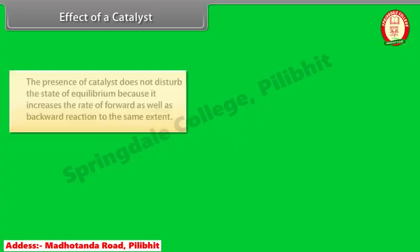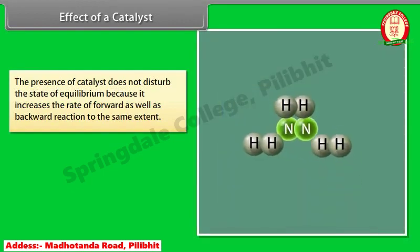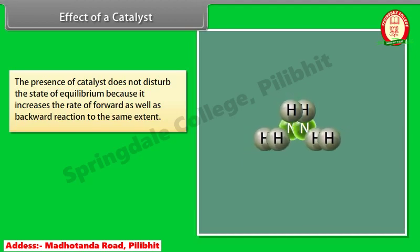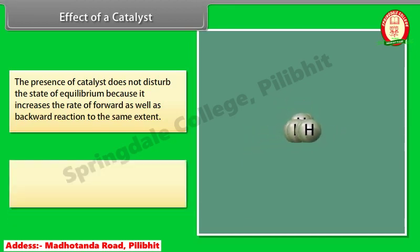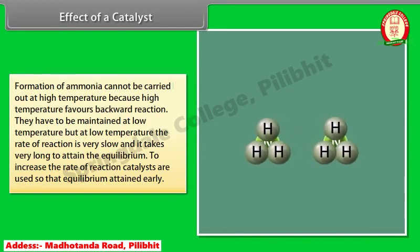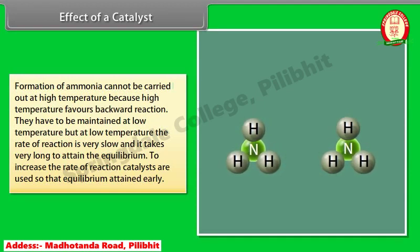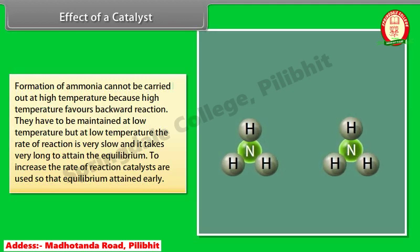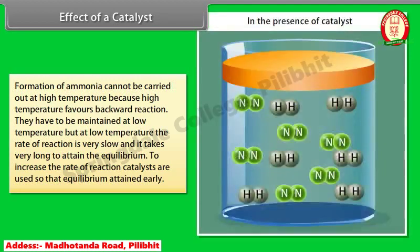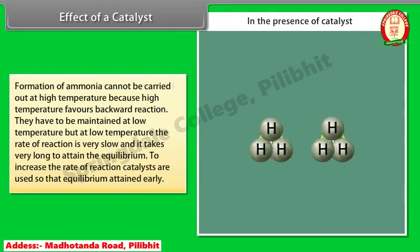Effect of a catalyst: the presence of a catalyst does not disturb the state of equilibrium because it increases the rate of the forward as well as the backward reaction to the same extent. The formation of ammonia cannot be carried out at high temperature because high temperature favors the backward reaction. They have to be maintained at low temperature, but at low temperature the rate of reaction is very slow and it takes very long to attain equilibrium. To increase the rate of reaction, catalysts are used so that equilibrium is attained early.